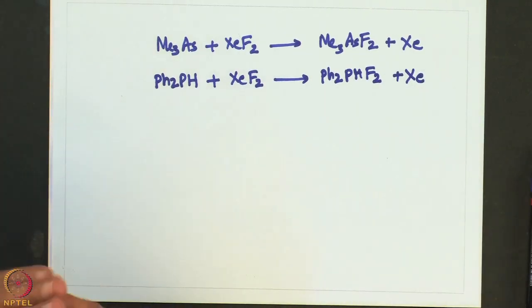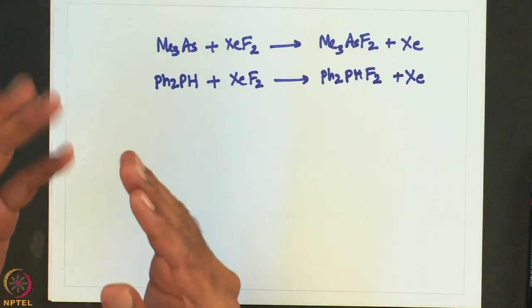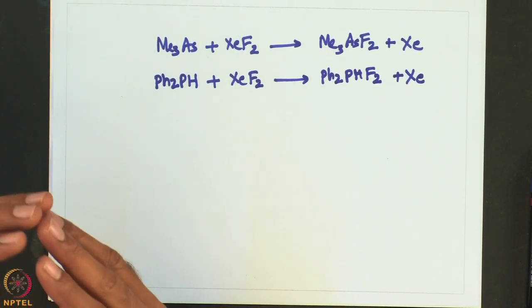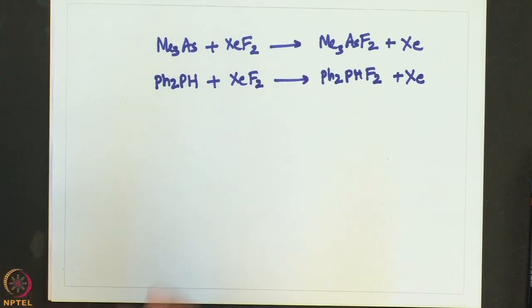XeF2 also oxidizes water to oxygen — because in water oxygen is in the −2 state, and when decomposed, oxygen is in the zero-valent state, which is essentially oxidation of oxygen. XeF4 can oxidize platinum metal to PtF4. Here xenon difluoride oxidizes water to oxygen, while XeF4 oxidizes platinum metal to platinum tetrafluoride (platinum in +4 state) plus xenon.